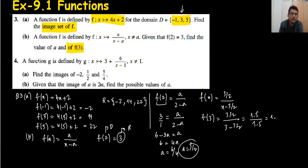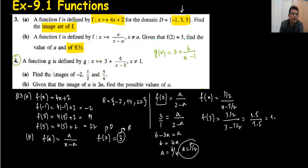Question number 4: the function is given in g, which is 3 + 6/(x minus 1). Note that when x = 1, denominator becomes 0, and we cannot have a fraction with denominator 0. Find the images of the given domain. Given that the image of a is 2a — the image of a means f(a) = 2a. This is domain and this is image.